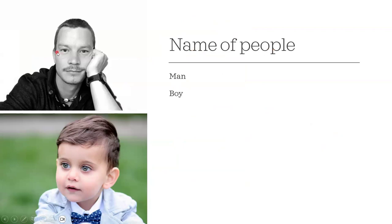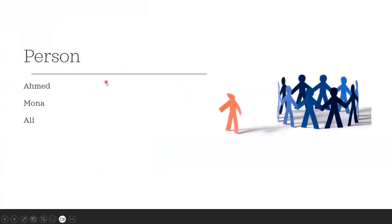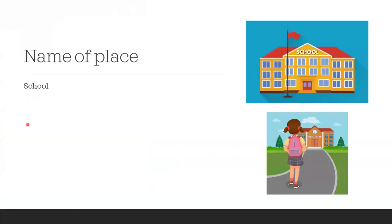Noun is a name of people. People like man, boy — those are people. Man is a noun, boy is a noun. As examples for person: Muna is a person, Ali is a person. These are also nouns.